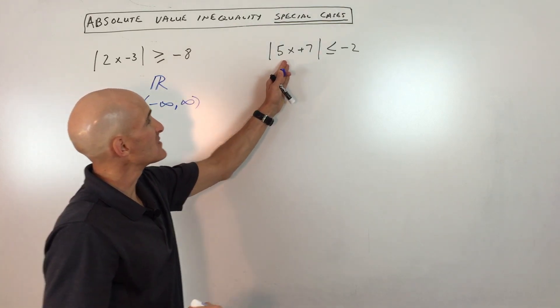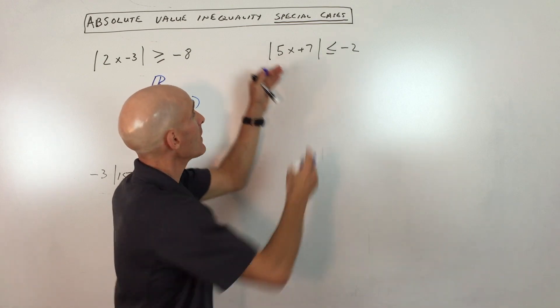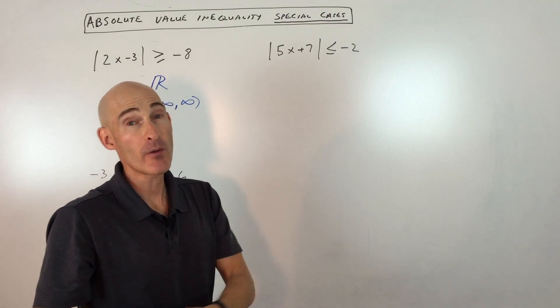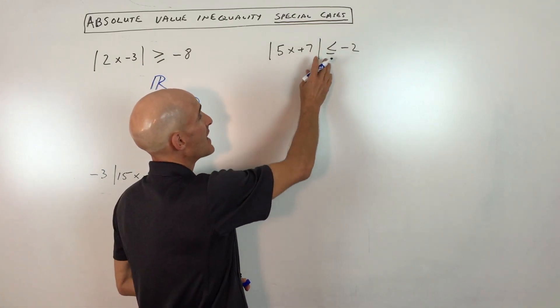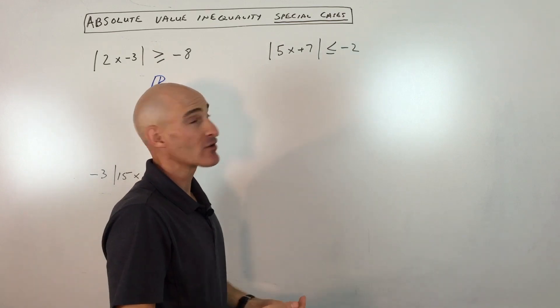Whereas this one here, the absolute value of 5x plus 7 is less than or equal to negative 2. Once we take the absolute value of whatever's in here, it's always going to be zero or positive. So that means it's never going to be less than or equal to negative 2. It's always going to be greater than that.